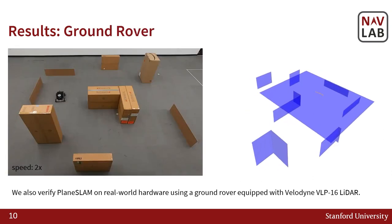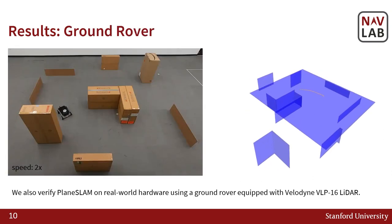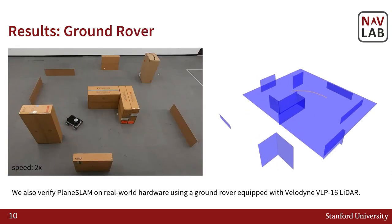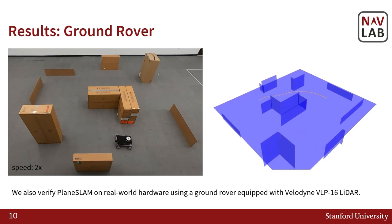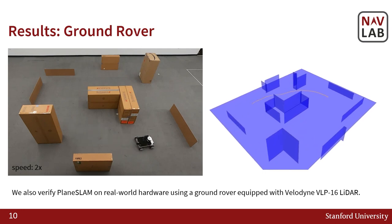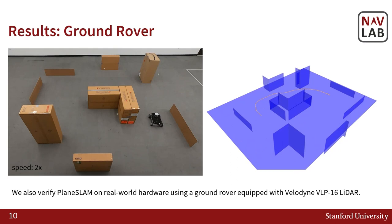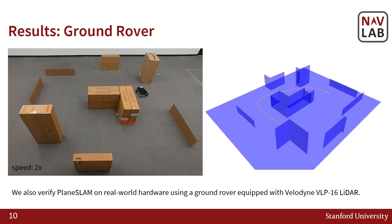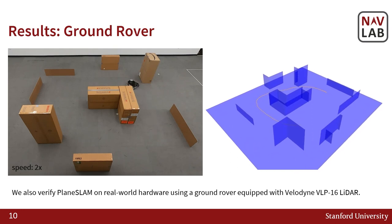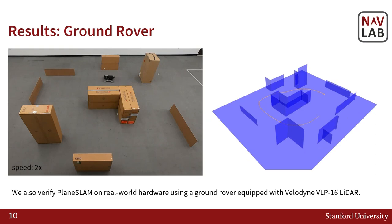We also verify PlaneSlam on real-world hardware using a ground rover equipped with a Velodyne VLP-16 LiDAR navigating in a cardboard box environment. Again, a loop closure occurs at the end of the trajectory, correcting both the trajectory and the map.